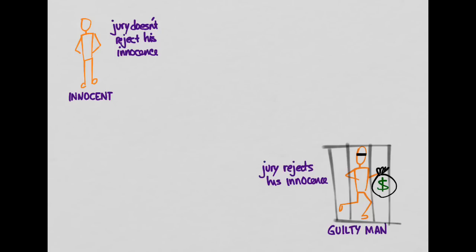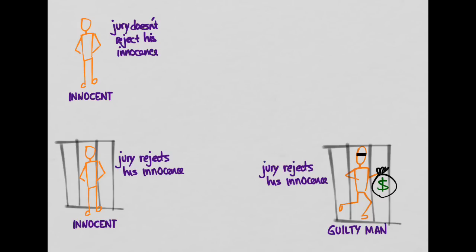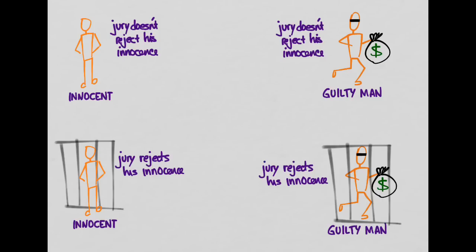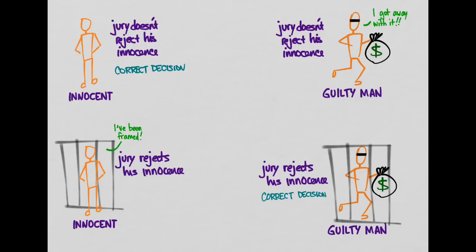Now the bad ones. In the first bad scenario, we have an innocent man but the jury rejects his innocence — we've made an error and put an innocent man behind bars. The other error: we have a guilty man but the jury does not reject his innocence, so we let him go free. Our only choice is to either reject his innocence or not reject it. Not rejecting means accepting it — and here we made a mistake letting the guilty man free.